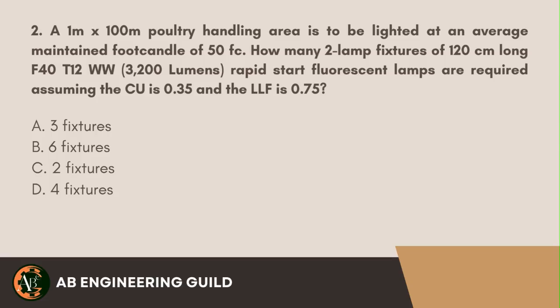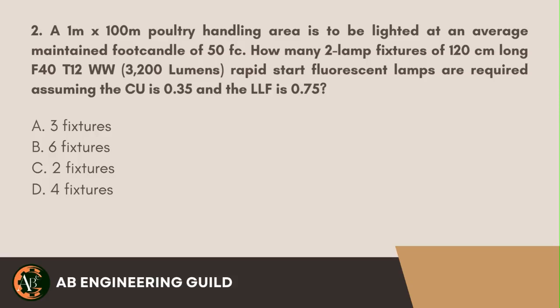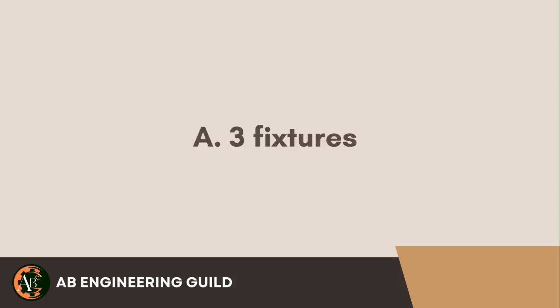Question 2. A 1 m x 100 m poultry handling area is to be lighted at an average maintained foot candle of 50 fc. How many 2-lamp fixtures, each using 120 cm long F40 T12WW (warm white) rapid-start fluorescent lamps delivering 3,200 lumens per lamp, are required, assuming a coefficient of utilization of 0.35 and a light loss factor of 0.75? A. 3 fixtures. B. 6 fixtures. C. 2 fixtures. D. 4 fixtures. Answer: A. 3 fixtures.